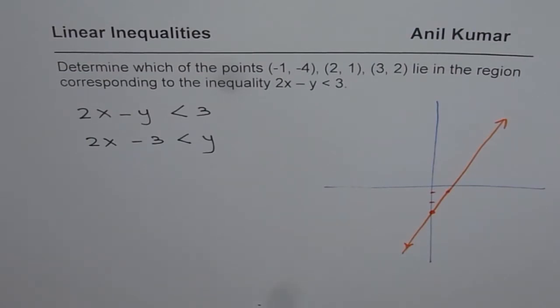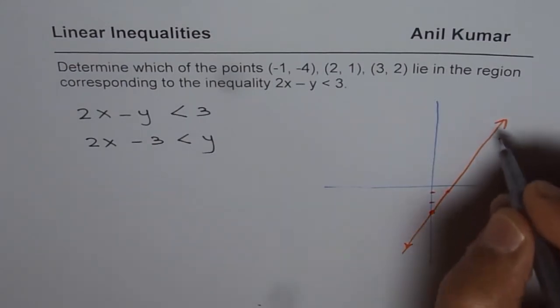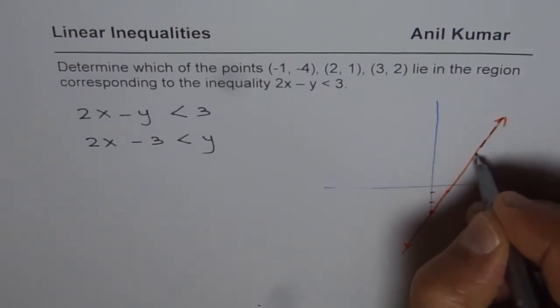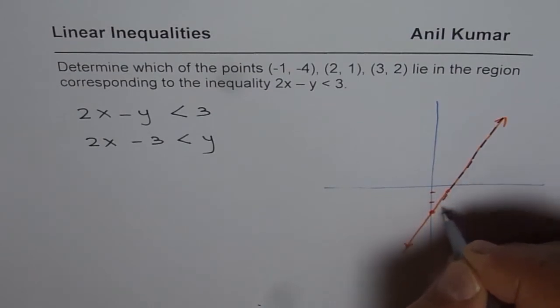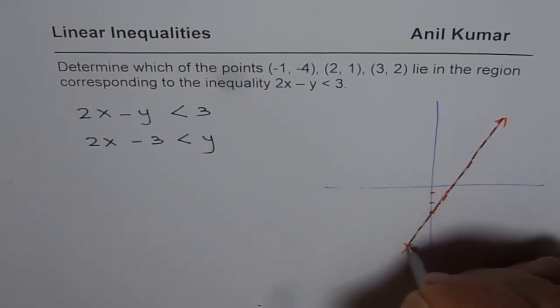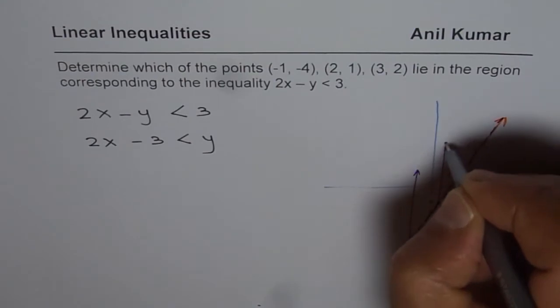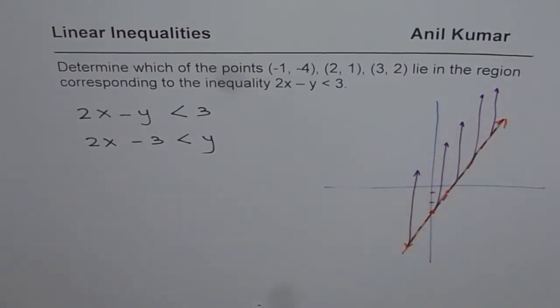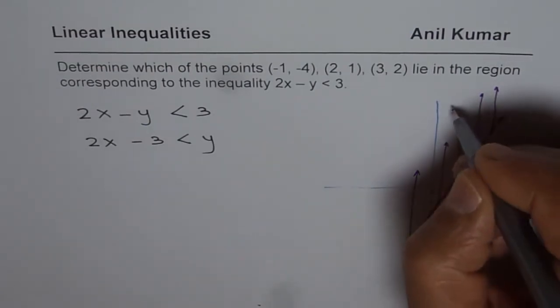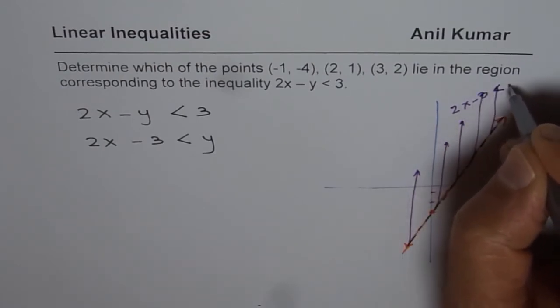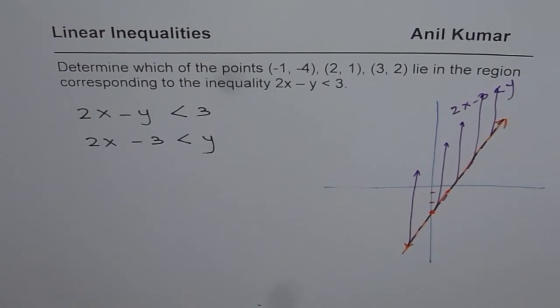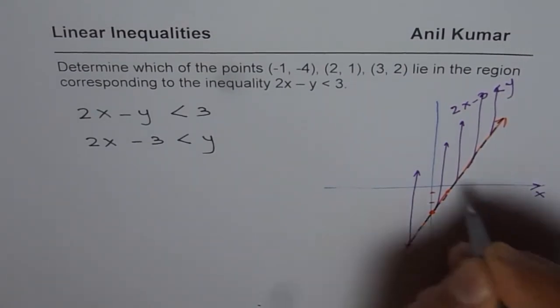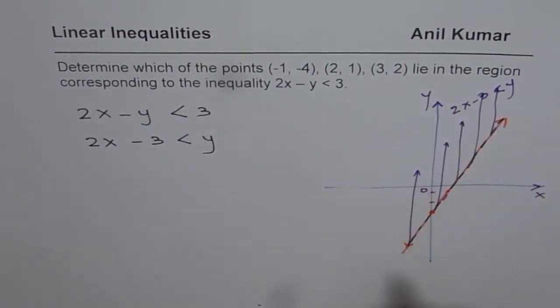When we are saying that y is greater than 2x - 3, then we mean that the solution does not include the line, but it includes everything above it. So everything above it is included, so that is what the solution is. This portion is, you can say, 2x - 3 is less than y, or y is greater than that. Where the x-axis, y-axis and origin.